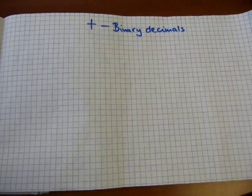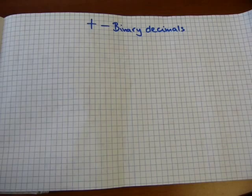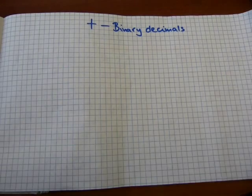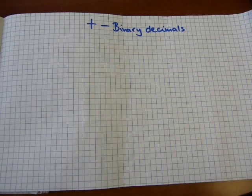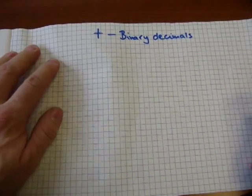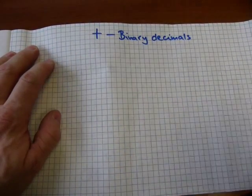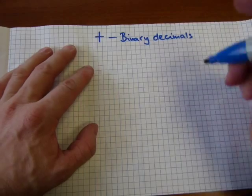I'll show you how numbers in binary decimal format add then subtract. Fairly straightforward, just have to keep in mind the place value for the numbers. Let's do something with addition.